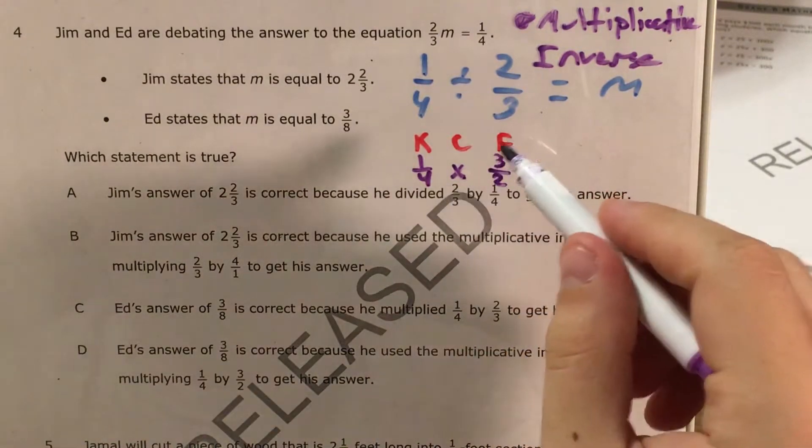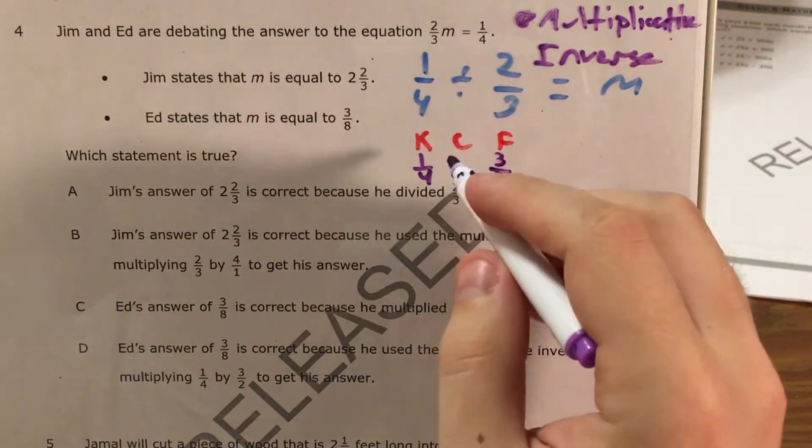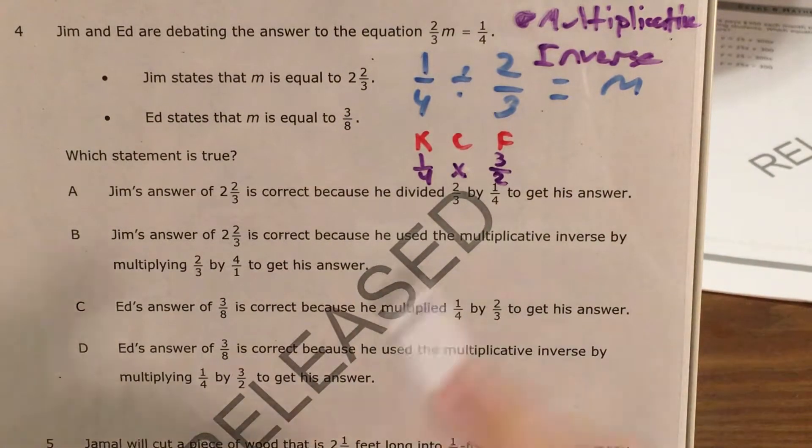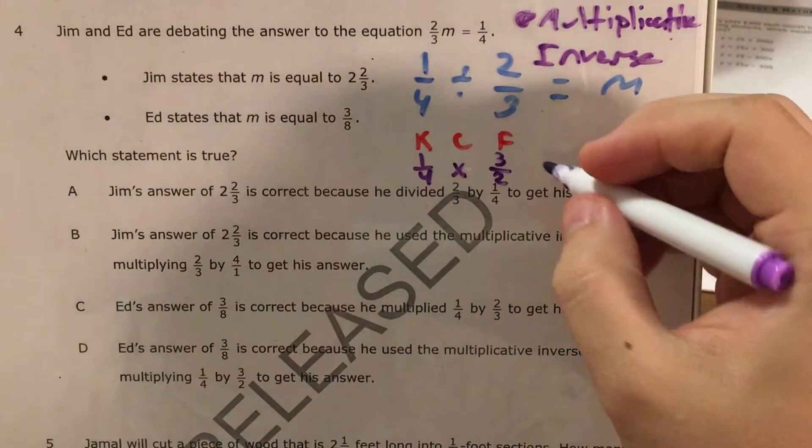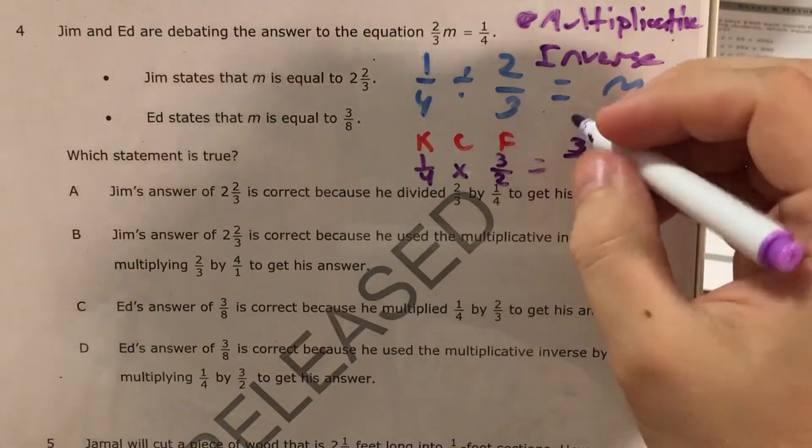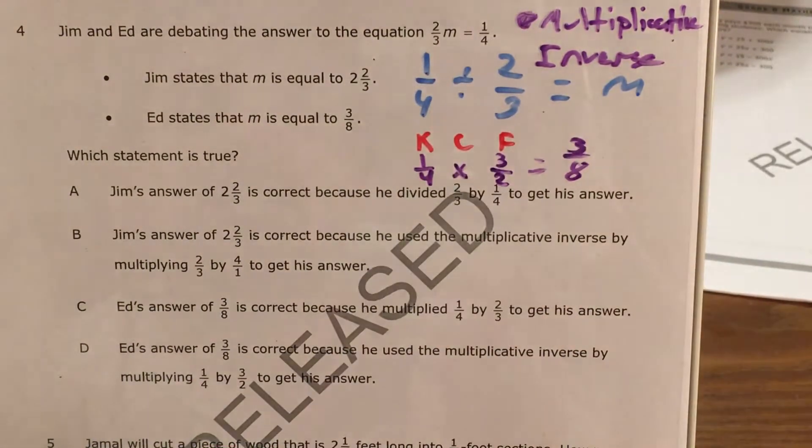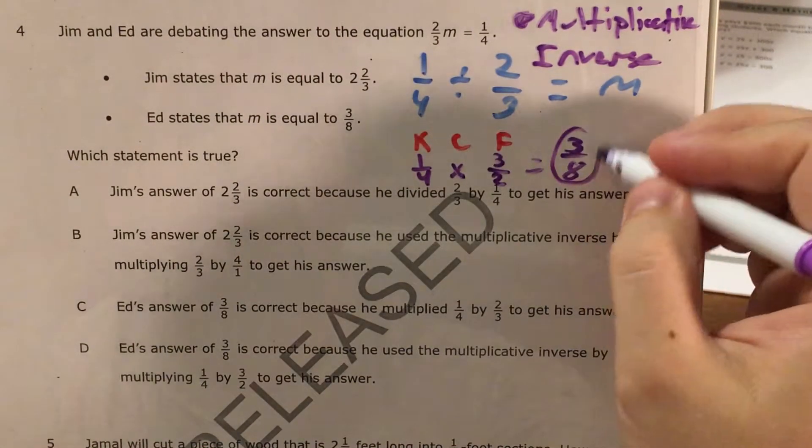Alright, so now let's go ahead and figure this out by multiplying across our numerators and denominators. One times three is three, and then four times two is eight. So here's our answer. Our answer is three-eighths.